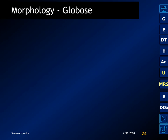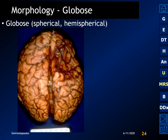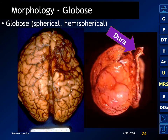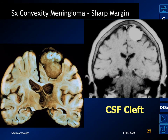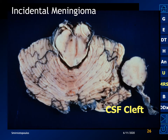The globose meningioma is shaped like a hemisphere. Growing slowly, it produces a smooth indentation on the cerebral surface and clinically presents with findings for involvement of that area of the cortex. Meningiomas very commonly have a CSF cleft — a space separating the tumor from the brain that facilitates neurosurgical resection. Here is an incidental meningioma of the tentorium producing a smooth excavation of the cerebellar surface with a nice CSF cleft.